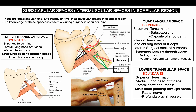The boundaries of the lower triangular space are: superiorly, formed by teres major; medially, by the long head of the triceps; and laterally, by the shaft of the humerus. The structures passing through this space are the radial nerve and the profunda brachiae vessels.